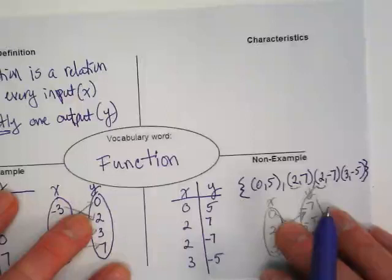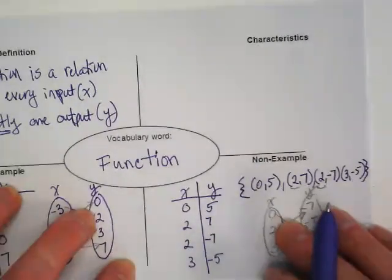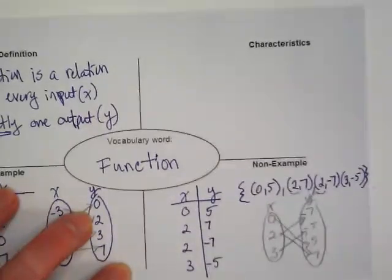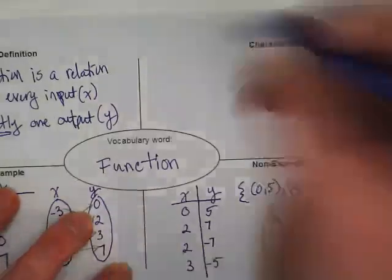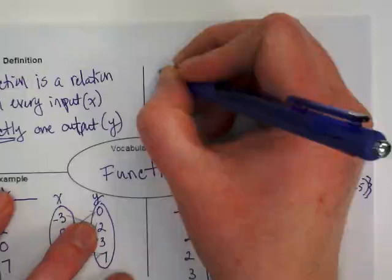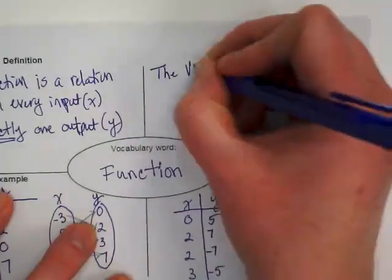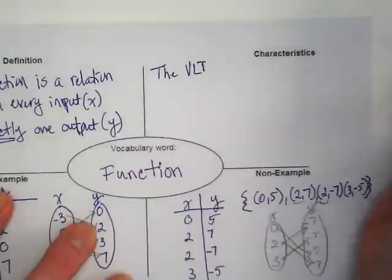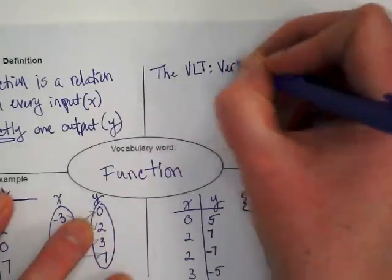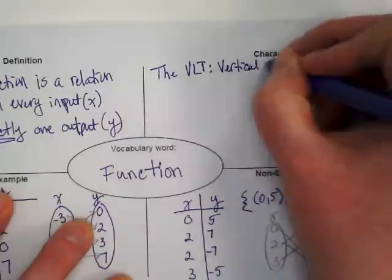Didn't somebody write, can a circle be a function? I think it was in this class. And a circle cannot be a function because it's not going to pass the test I'm going to talk about next. A major characteristic of a function is what we call the VLT. And that's not a sandwich. Vertical line test.